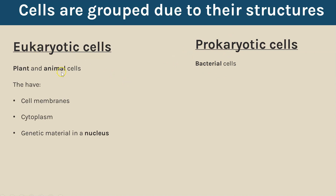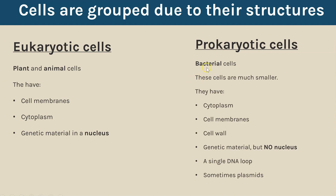Some of the key structures in animal and plant cells — our eukaryotic cells — are the cell membrane and cytoplasm. The key one is that their genetic material, the DNA, is found in the nucleus. Comparing this to a prokaryotic cell like bacteria: they are much smaller in size, but there are also some similarities — they both have cytoplasm and cell membranes. Only plant cells have a cell wall, whereas all prokaryotic cells have a cell wall. The big difference is prokaryotic cells do not have a nucleus. They do still have genetic material, sometimes DNA, but it is found as a single loop loose within the cytoplasm.